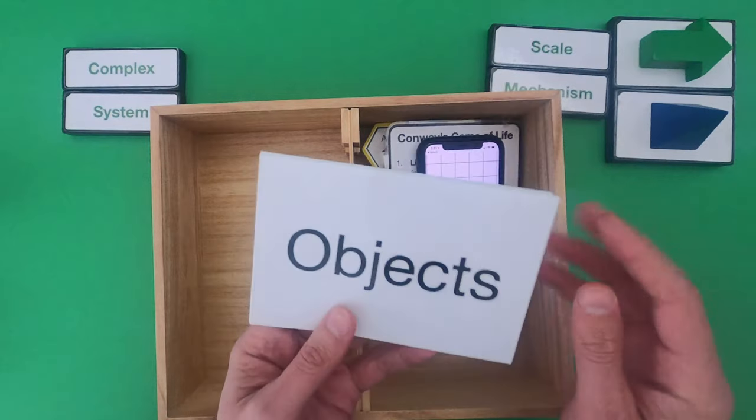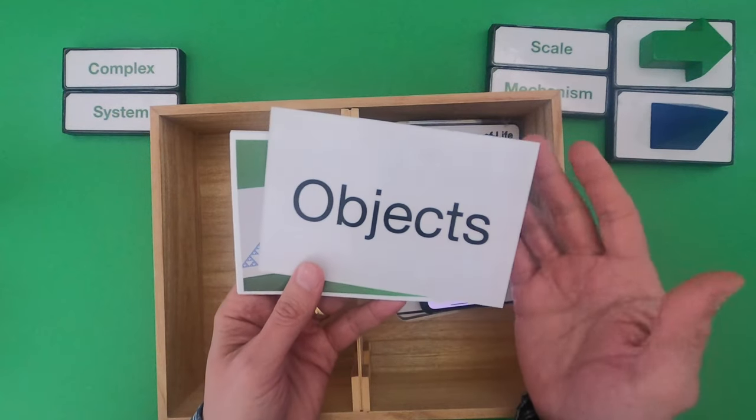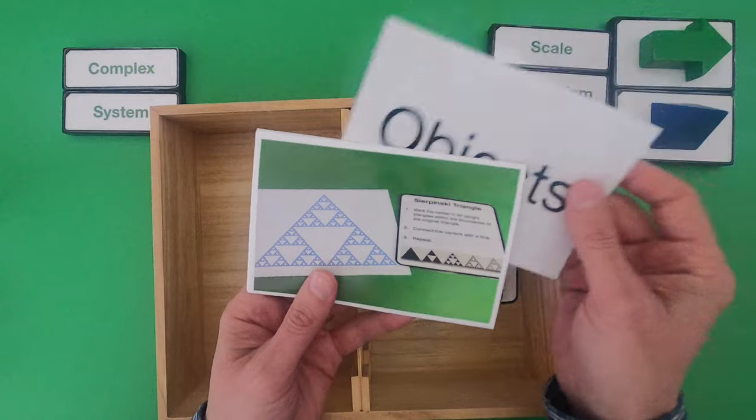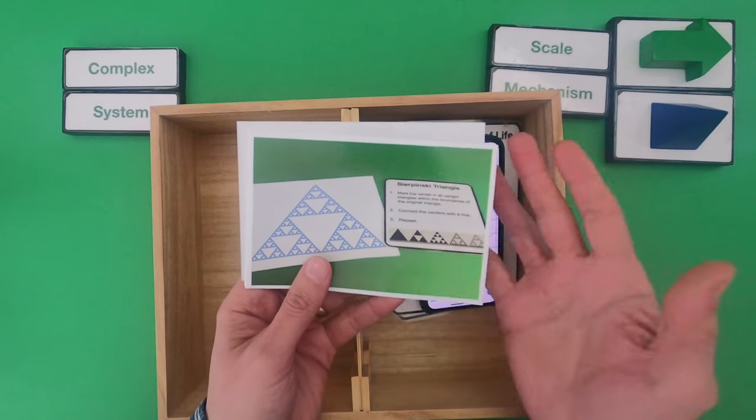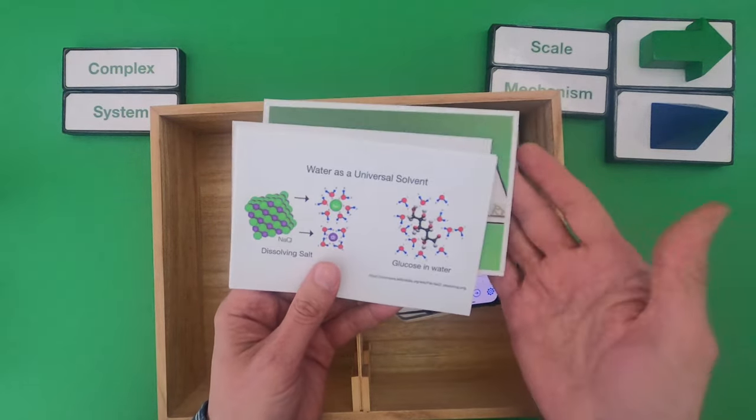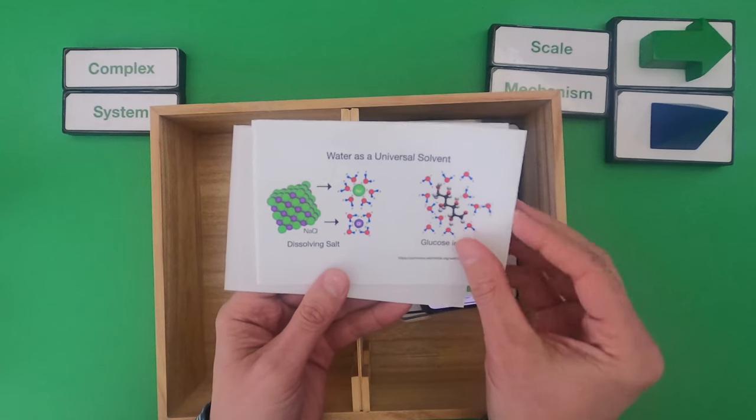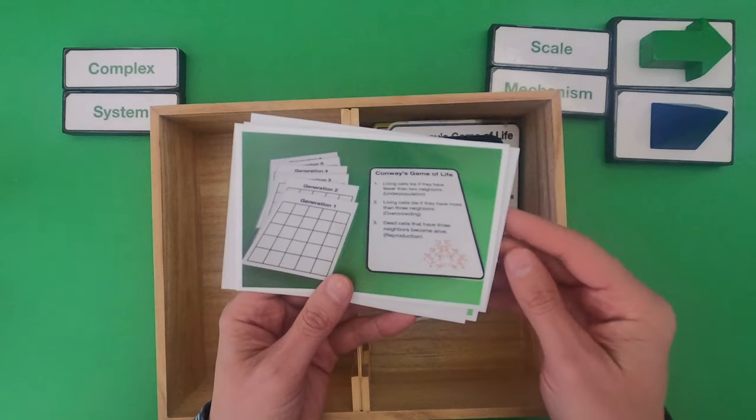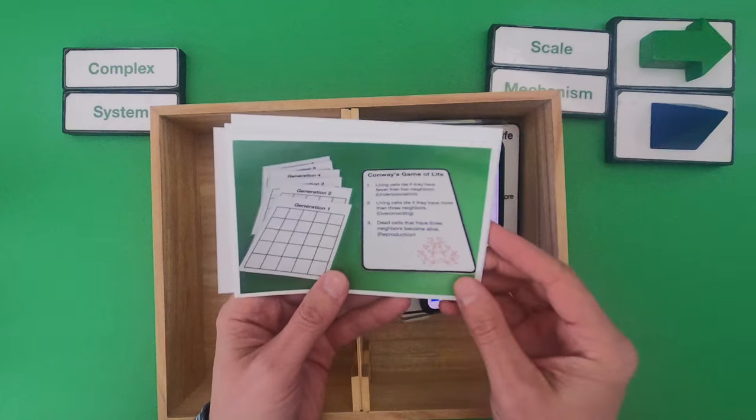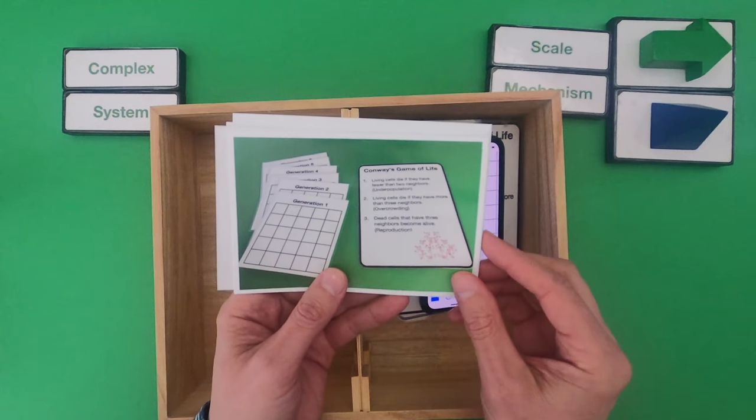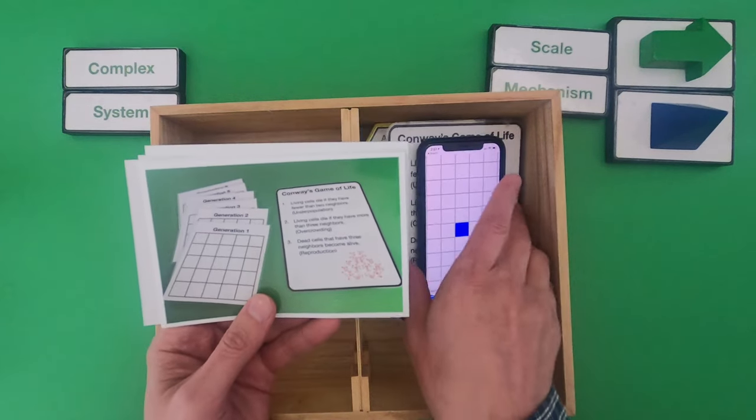By the time you've watched this video you should be able to identify the simple rules or scale mechanisms in something like a fractal. So Sierpinski's triangle is an example of that or even water as a universal solvent. But I'm going to start with one of the first complex systems that was modeled and this is called Conway's Game of Life. So let me put it out and we'll take a look at it.